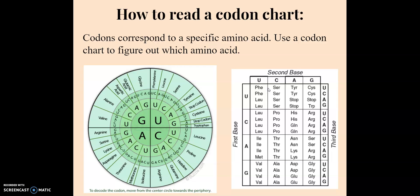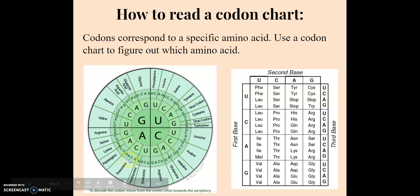There are two different types of charts. First we have this wheel, and the way the wheel works is by starting in the center and moving outwards. You find the first base of the codon — let's say our first base is A. Then let's say the sequence is A-G-C. So we start with A, move to the next circle and find the G in that section. The G is here, then you find the C, which is right here, and you'll know that codon codes for serine. So you start from the center and find the three-letter sequence going outward on the wheel.